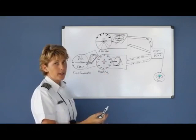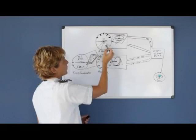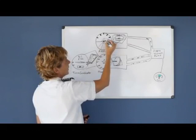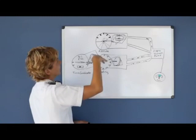The attitude indicator has several markings on it. Sometimes there's a different variety of them, but most of them will have a short hash and a long hash. The short represents five degrees pitch up, and the long hash represents ten degrees pitch up. And then the same thing would be true on the bottom part of it.